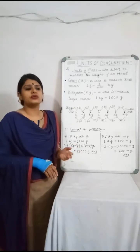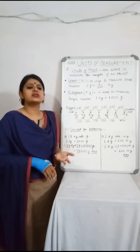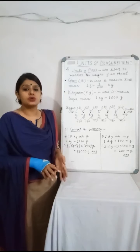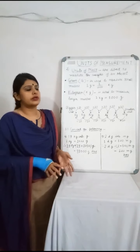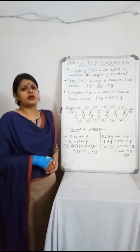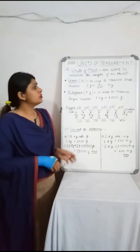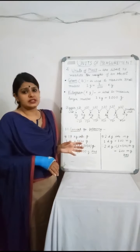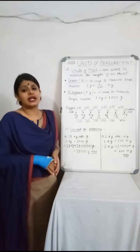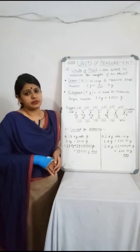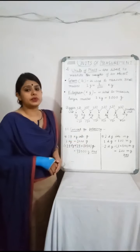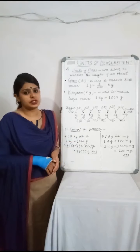If we have to know the weight of a certain object — suppose a soap or a box — these are of small weights, so these units are calculated in grams. We should know that 1 gram is equal to 1 upon 1000 kg.